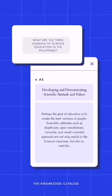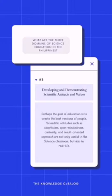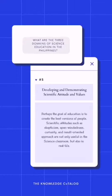The last domain is developing and demonstrating scientific attitudes and values. It is perhaps the goal of education to create the best versions of people. Scientific attitudes such as skepticism, open-mindedness, curiosity, and a results-oriented approach are not only useful in the science classroom but also in real life. These are what fuel innovations — it's these scientific attitudes and values that truly bring innovations to the world, not just intelligence alone. It takes a person curious enough to really pursue something. So as teachers, we need to have that sense of wonder in ourselves so we can transfer it to our students.